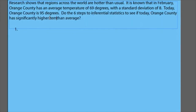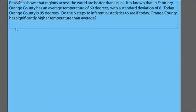Notice that I'm doing a higher-than-average question. What I was able to do was use previous research to justify that higher-than-average framing. If I didn't have the piece that says research shows that regions across the world are hotter than usual, I could not justify doing the higher question. So if you see something suggesting a one-tailed conclusion like higher or lower, you have to see some previous research to justify that. So I'm justifying doing a one-tailed question.